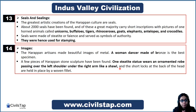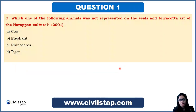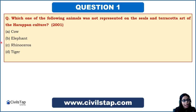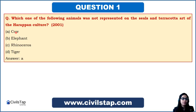Now we will go through UPSC questions from Indus Valley Civilization from the past 23 years. The first question came in the prelims of 2001: 'Which one of the following animals was not represented on the seals and terracotta art of the Harappan culture?' The options were: Cow, Elephant, Rhinoceros, and Tiger. As discussed, Tiger, Rhinoceros, and Elephant were all mentioned on seals, so options B, C, and D cannot be the answer. Our answer is option A — the Cow was not represented on the seals and terracotta art of the Harappan culture.